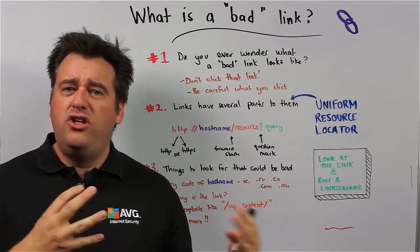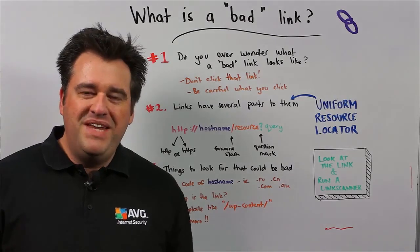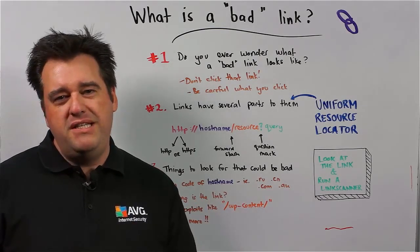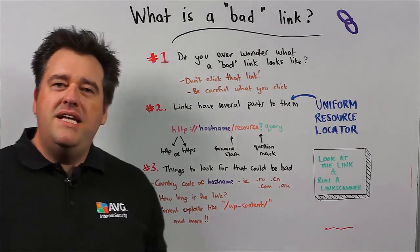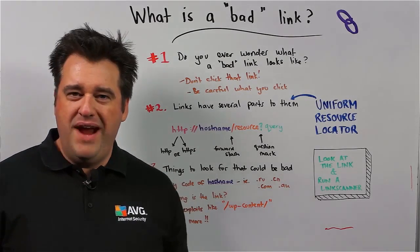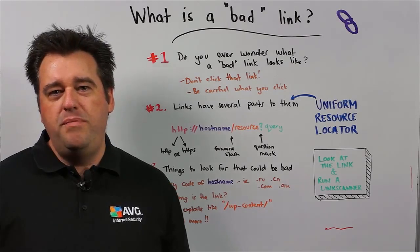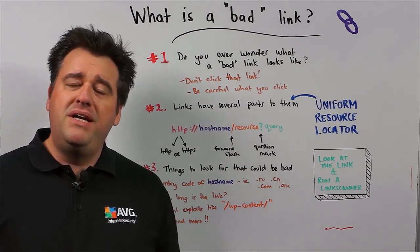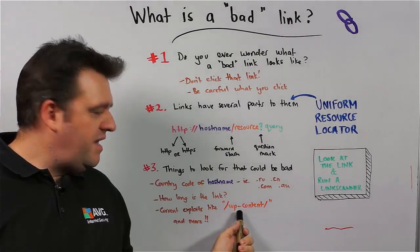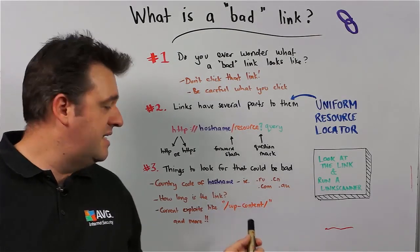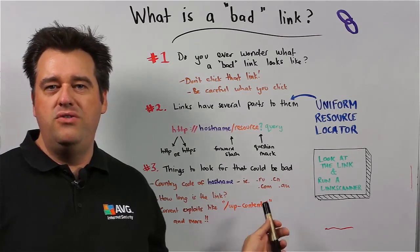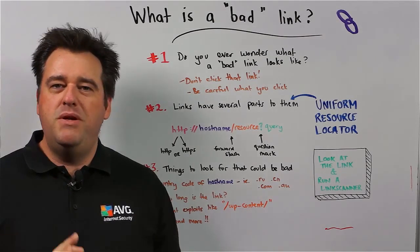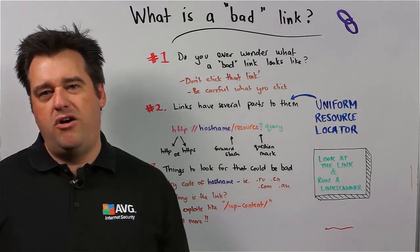The next thing you can think about is how long is the link you're about to click on. If it is really long and really hard for your mind to work out which part is which, perhaps it's best to leave it alone. Also understand some of the current exploits — one of them involves WordPress websites, which are literally infecting the world with links distributed from compromised WordPress sites. One thing you can look for in many current malicious links is the term WP-content. It's not a hard and fast rule, but especially in spam emails, this appears to be quite common at the moment.